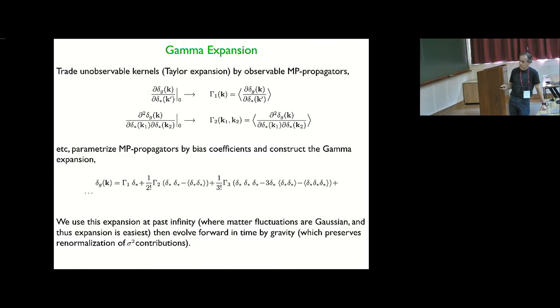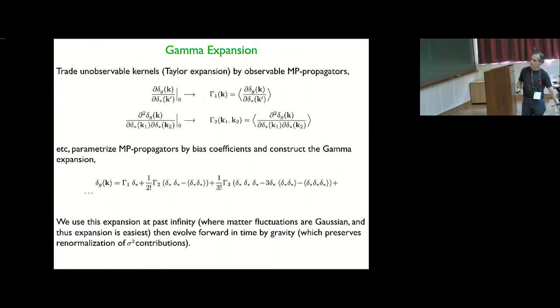So you have, now you have this set of renormalized expansion coefficients. Now these coefficients are not numbers anymore, that depend on the wave numbers and on the geometry of these k vectors, just because these operators have a lot more structure than just delta to the n.